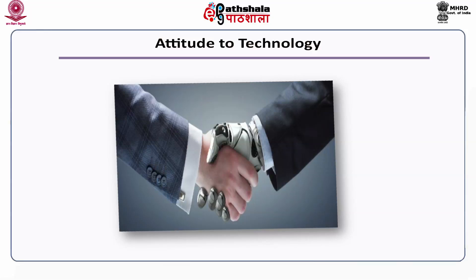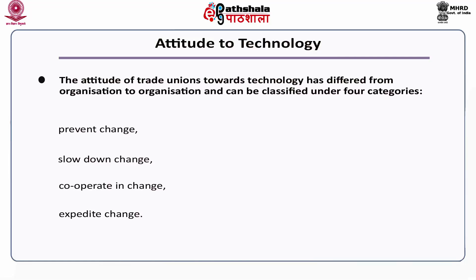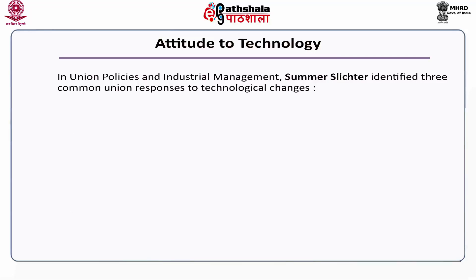The attitude of trade unions towards technology has differed from organization to organization and can be classified under four categories: prevent change, slow down change, cooperate in change, and expedite change. In union policies and industrial management, Summers-Licher identified three common union responses to technological changes: obstruction, competition, and control.